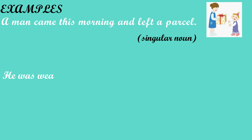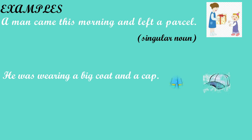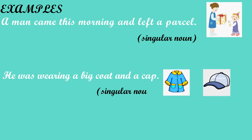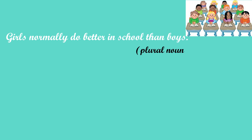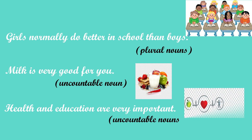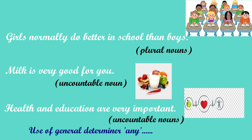Next example: He was wearing a big coat and a cap — there is only one coat and one cap, so these are singular nouns. We use no determiner with plural nouns and uncountable nouns. For example: Girls normally do better in school than boys — plural nouns. Milk is very good for you — uncountable noun. Health and education are very important — uncountable nouns. We use the general determiner any with a singular noun or an uncountable noun when we are talking about all of those people or things.